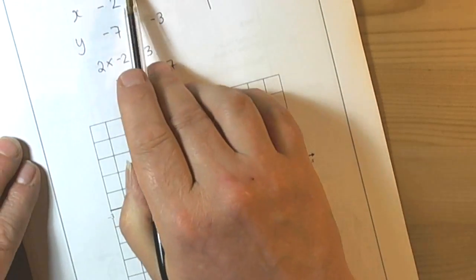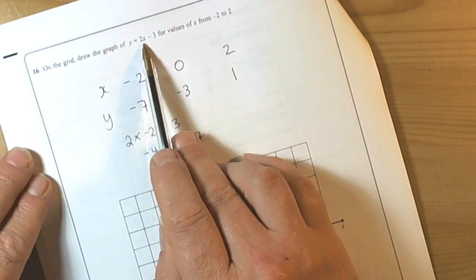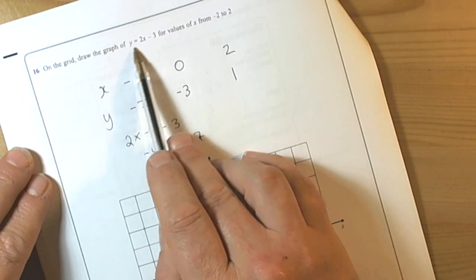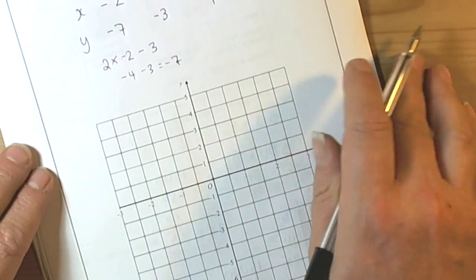So if this works then we should expect equations of this type y equals 2x take away 3 is the standard type of equation for a straight line, so we should get a straight line.